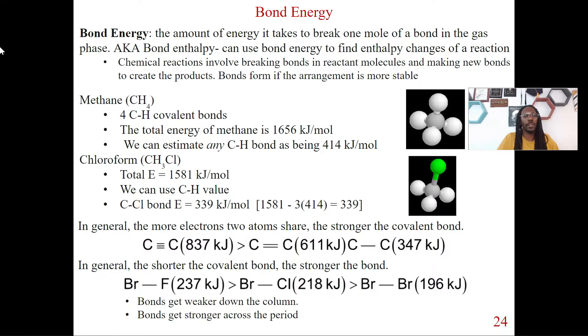So if we look at methane, CH4 for instance, the total energy of methane is going to be 1656 kilojoules per mole. But we got to understand that if we look at here, methane, we have a carbon bond to a hydrogen bond. So we have one of these, but in reality we have four CH bonds.